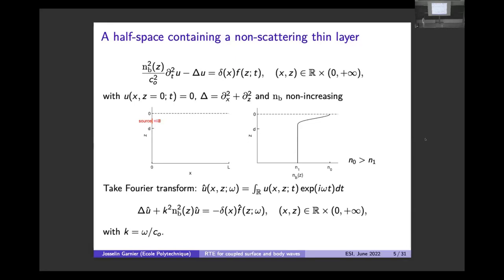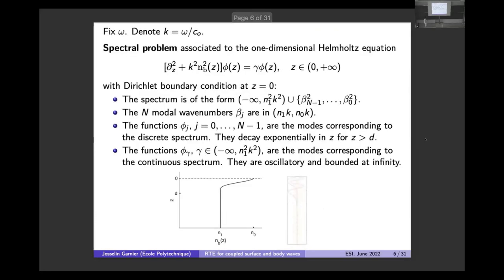We want to model surface waves, so we take an index of refraction that depends only on z, maximal close to the surface at N_0, then decays smoothly up to some depth d, and after d it is constant equal to one. Since the medium does not change in time, we take a Fourier transform in time and end up with a Helmholtz equation with a source term.